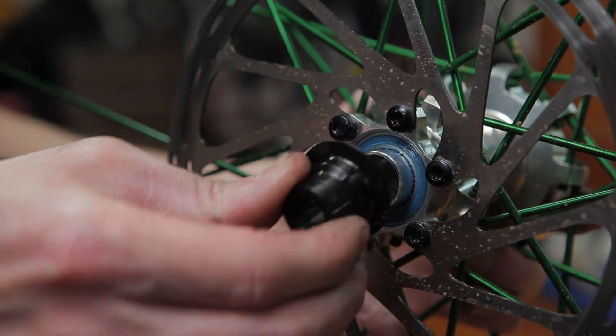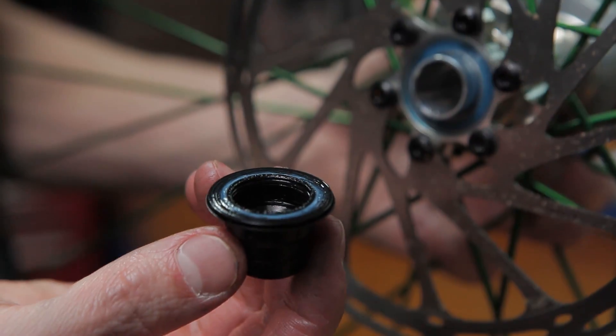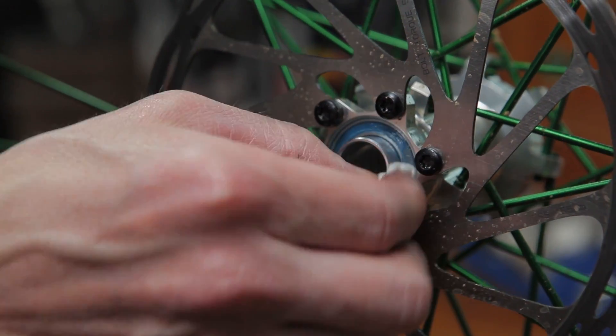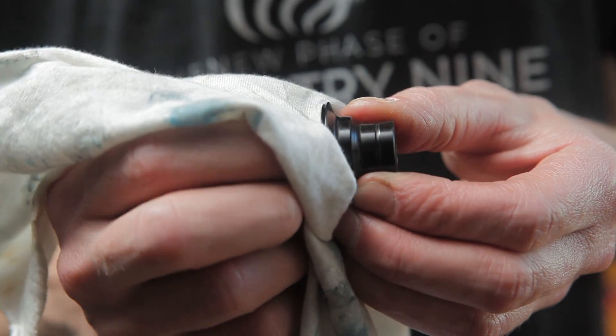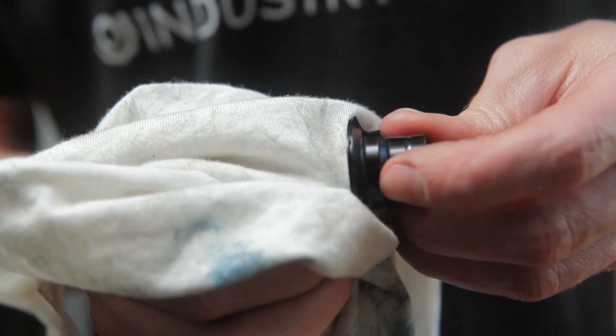Pull your disc side end cap and wipe away any old grease and debris. The new Hydra end caps utilize a labyrinth seal as opposed to a Teflon one. Simply wipe the labyrinth clean of any excess dirt or grime.